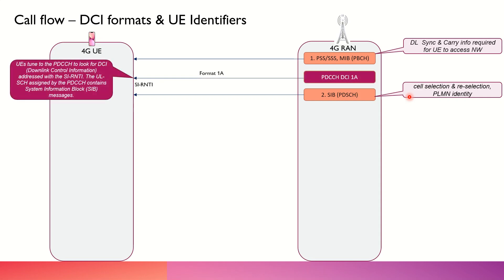In between that, what normally happens is there is a DCI format which comes into the picture, being passed on within the control channels which is PDCCH. This format would be different depending upon the messages that are going to be exchanged between these two entities. In this case, the format we are getting is 1A, and if we refer to the previous slide, we can see that it is related to the system information being passed on from the base station to the UE. Every such DCI when passed on has a temporary ID associated with the UE at that particular time, which helps to troubleshoot issues in the network and identify at which stage the UE had an issue.